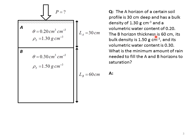And the B horizon is twice as thick. It's 60 centimeters thick. It also has a higher bulk density, which is common. It has a bulk density of 1.5 grams per cubic centimeter, shown here. And its volumetric water content is 30%, shown here. So the question we have here is, what's the minimum amount of rain needed to fill the A and B horizons to saturation?